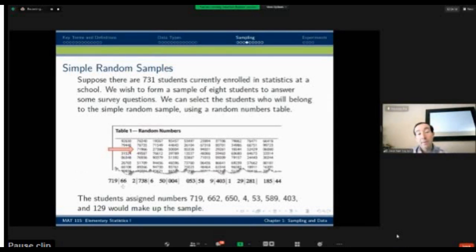Then the next number, 662. The next three digits here, 662. I take number 662 in the list. The next student is number 004. So the fourth student on the list. Then the 53rd student, the 589 student, and so on. So I can keep going until I end up with this last student in my group is student number 129. At that point, I have my eight numbers for my sample. So I stop.